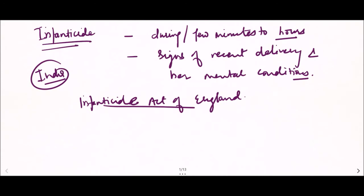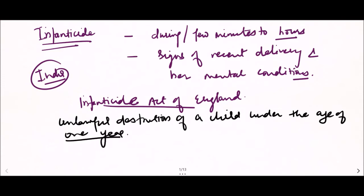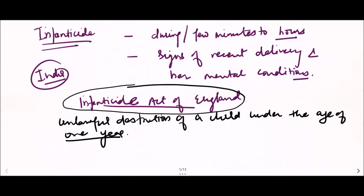The Infanticide Act of England defines infanticide as the unlawful destruction of a child under the age of one year. Now let us look at various definitions related to infanticide.